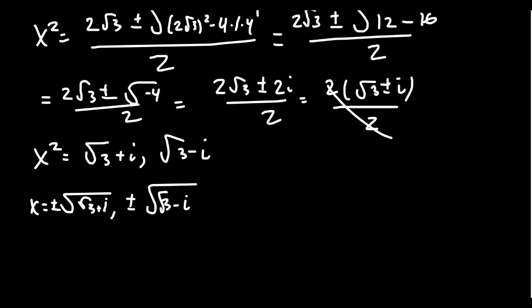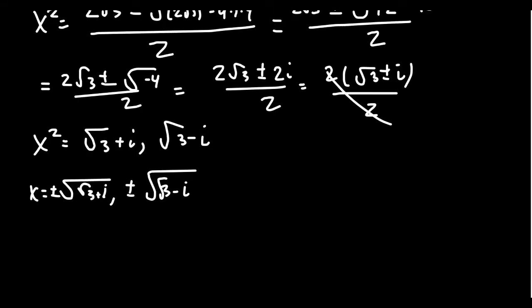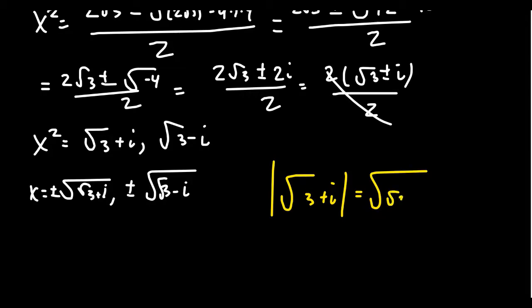Let's investigate those. If we take the modulus of root 3 plus i, we take the square root of root 3 squared plus 1 squared. This gives us the square root of 3 plus 1, which is the square root of 4, which equals 2. Both of these numbers have a modulus of 2. Their arguments will, of course, be a little bit different.